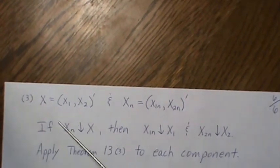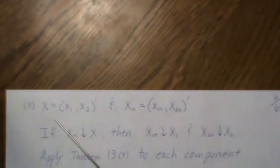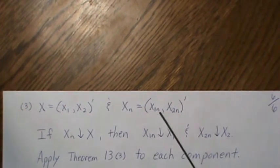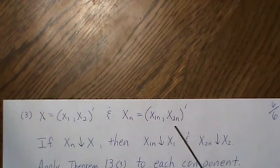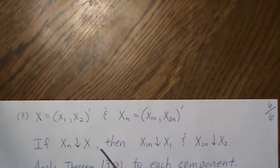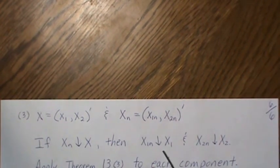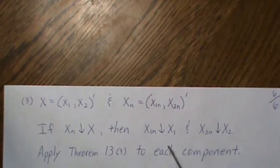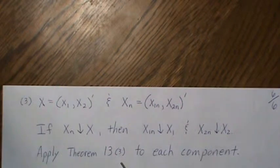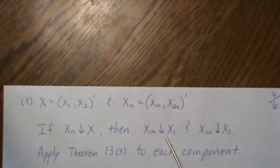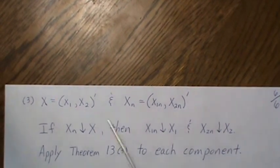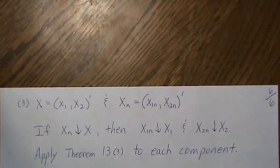If a vector (x1n, x2n) decreases to (x1, x2), meaning each component decreases to its respective component, then applying theorem 13 part 3 to each component shows the bivariate CDF is right continuous in each coordinate.